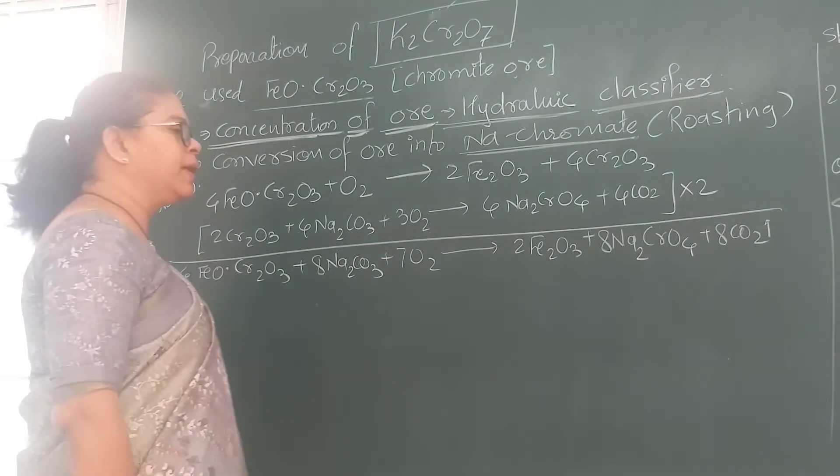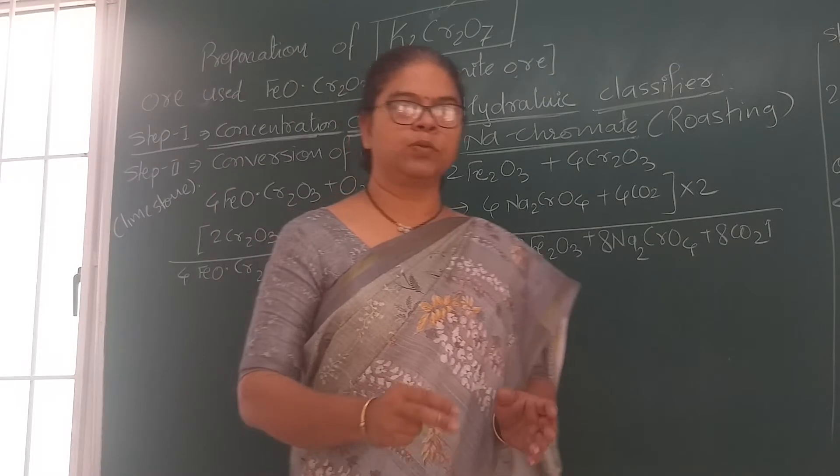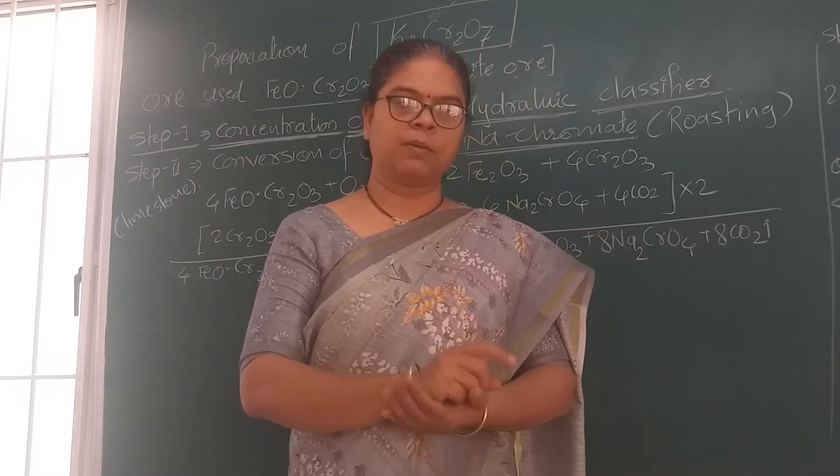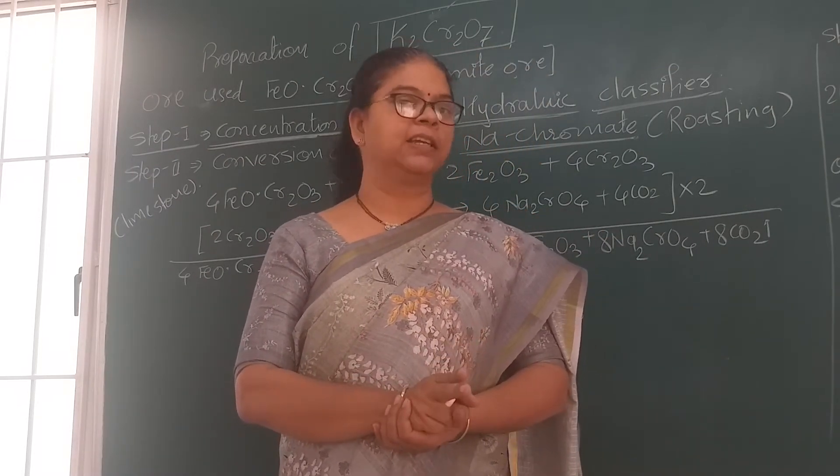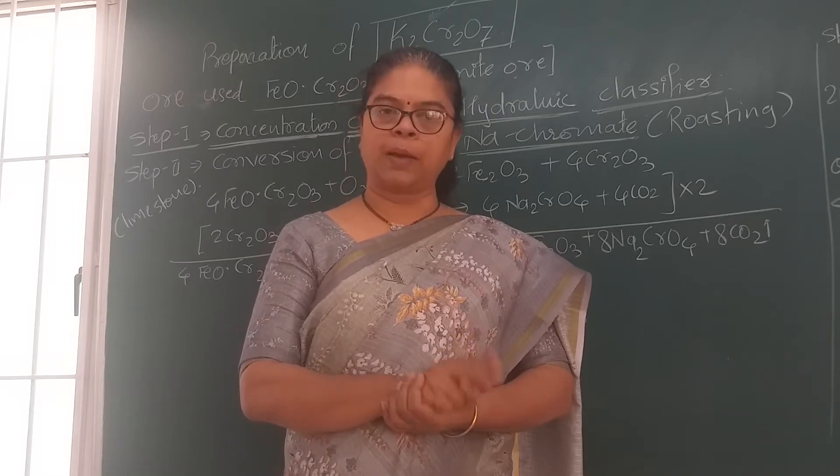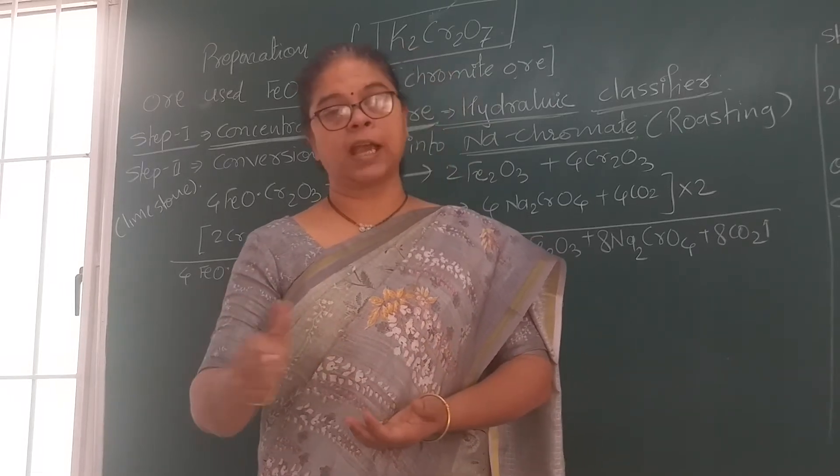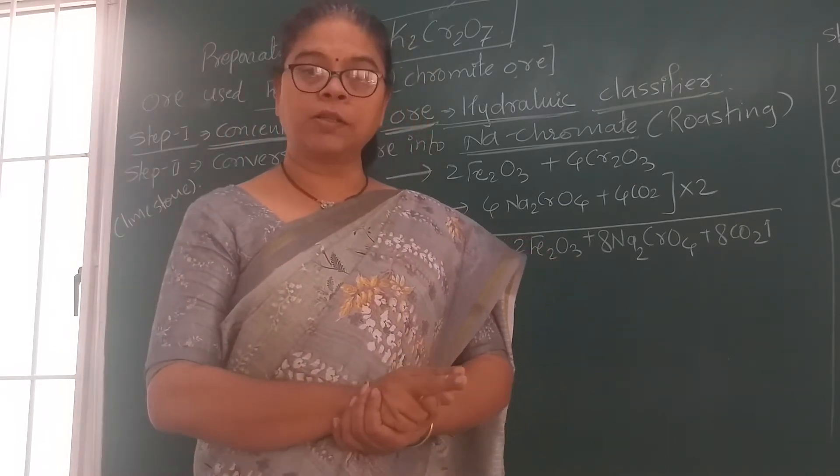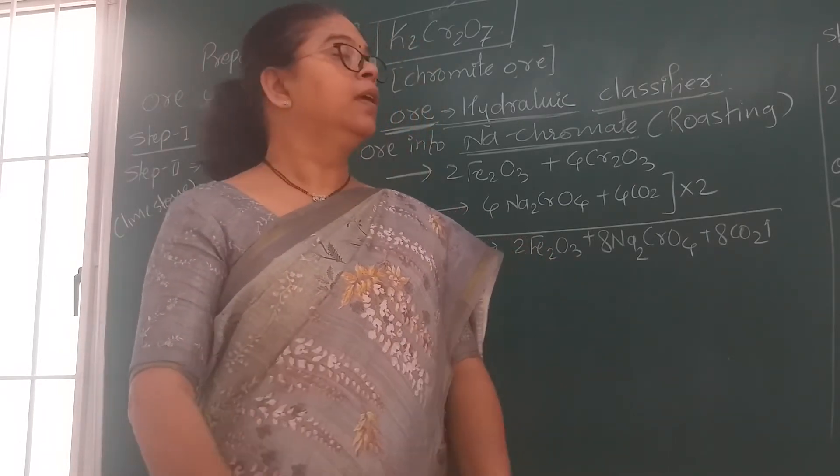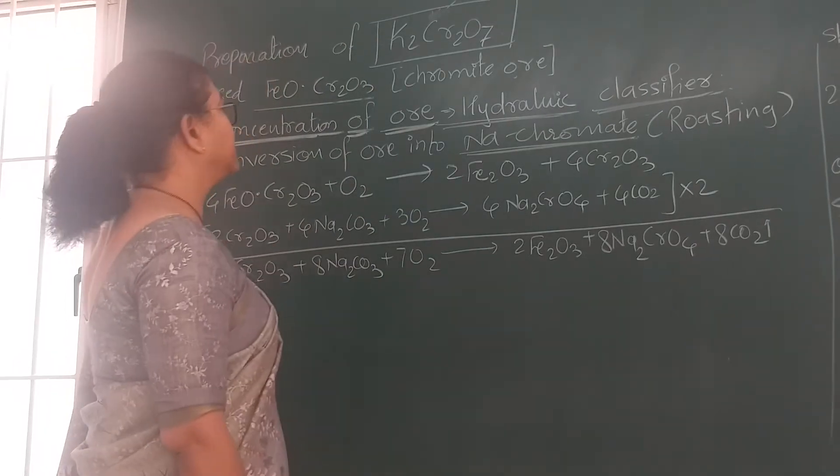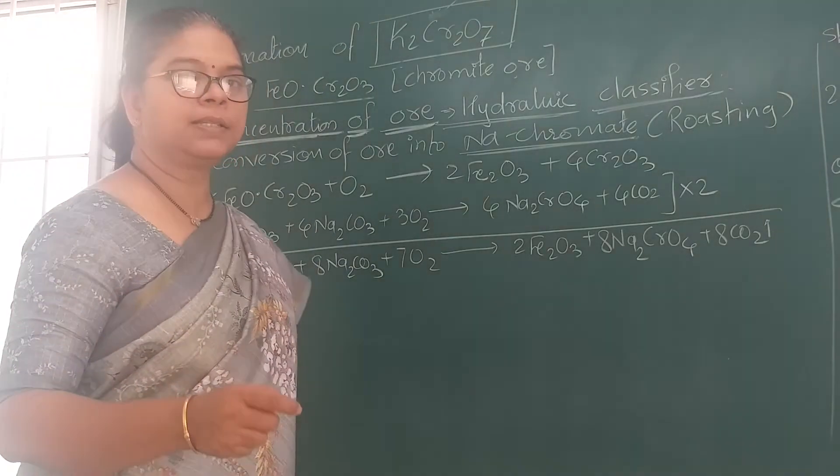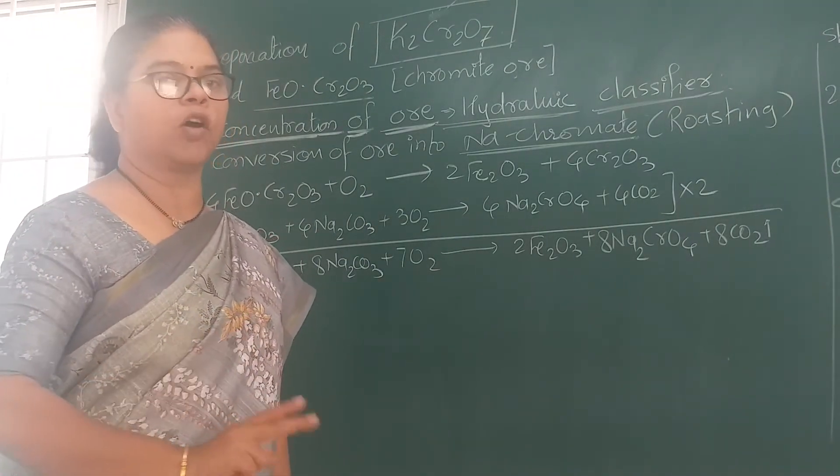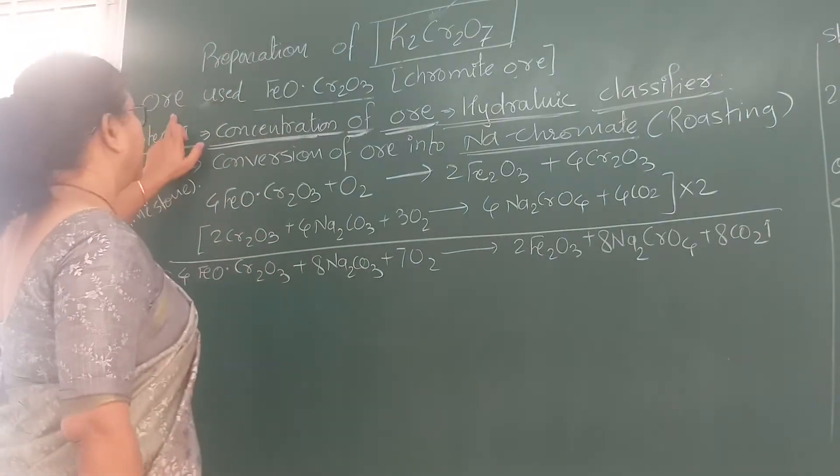Potassium dichromate is a very familiar compound to us because it is a good oxidizing agent in conversion of primary alcohols into carboxylic acid. We have used potassium dichromate in concentrated acidic medium. First thing is that potassium dichromate is dark or distinctly orange colored compound.